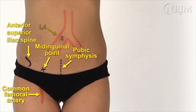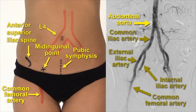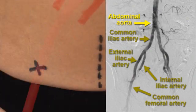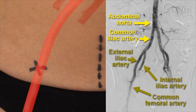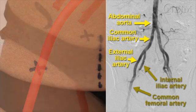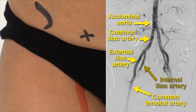The aorta bifurcates at the fourth lumbar vertebra, L4, which in most patients is at the level of the umbilicus. At the point of bifurcation, the aorta forms the right and left common iliac arteries, which eventually form the external iliac arteries, each supplying an entire lower limb. The external iliac arteries travel beneath the inguinal ligament to form the common femoral arteries.